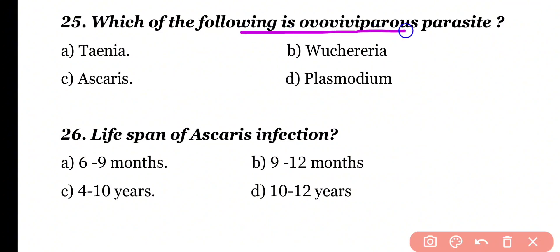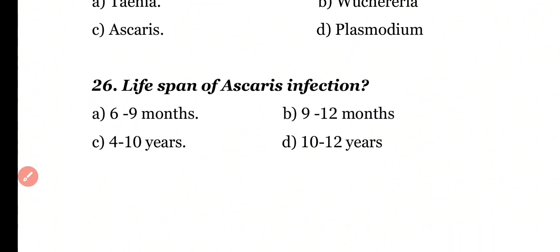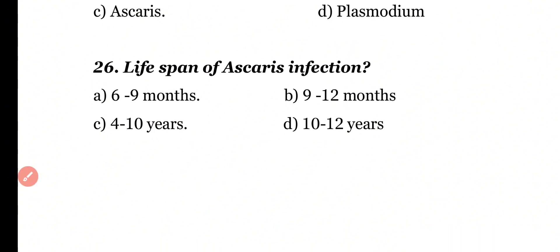Question 25: Which of the following is an ovo-viviparous parasite — Taenia, Wuchereria, Ascaris, or Plasmodium? Correct answer is option B. Wuchereria bancrofti is an ovo-viviparous parasite. So the correct answer is option B.